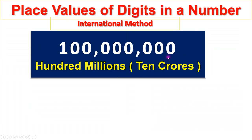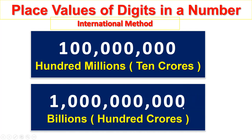Units, tens, hundreds, thousands. Units, tens, hundreds. Ten thousands, millions, ten millions, hundred millions, billions or hundred crores.